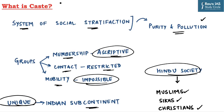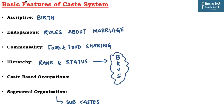Whenever you come across a question, you can start your answer with this particular information, which can build a strong introductory start. Now we will see the basic features of caste system. The first one is ascriptive — one's caste is decided by birth and it is not a matter of choice. The second one is endogamous, which is related to rules about marriage. In most cases, marriages are restricted to members of the same caste group.